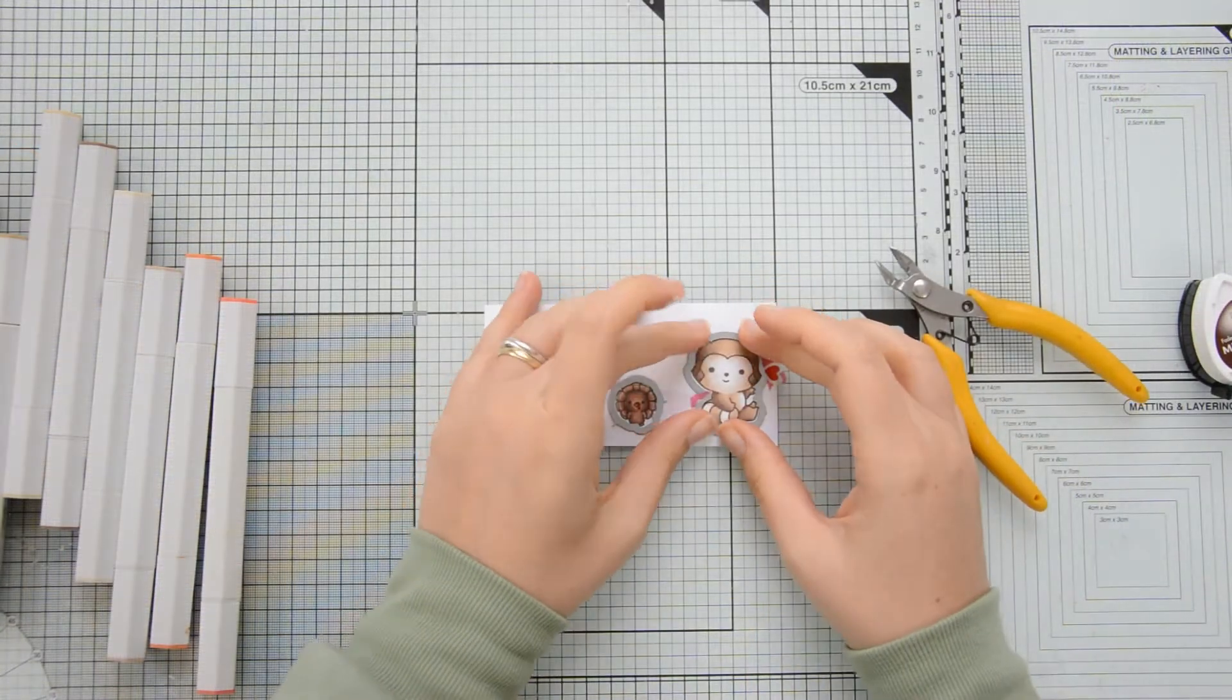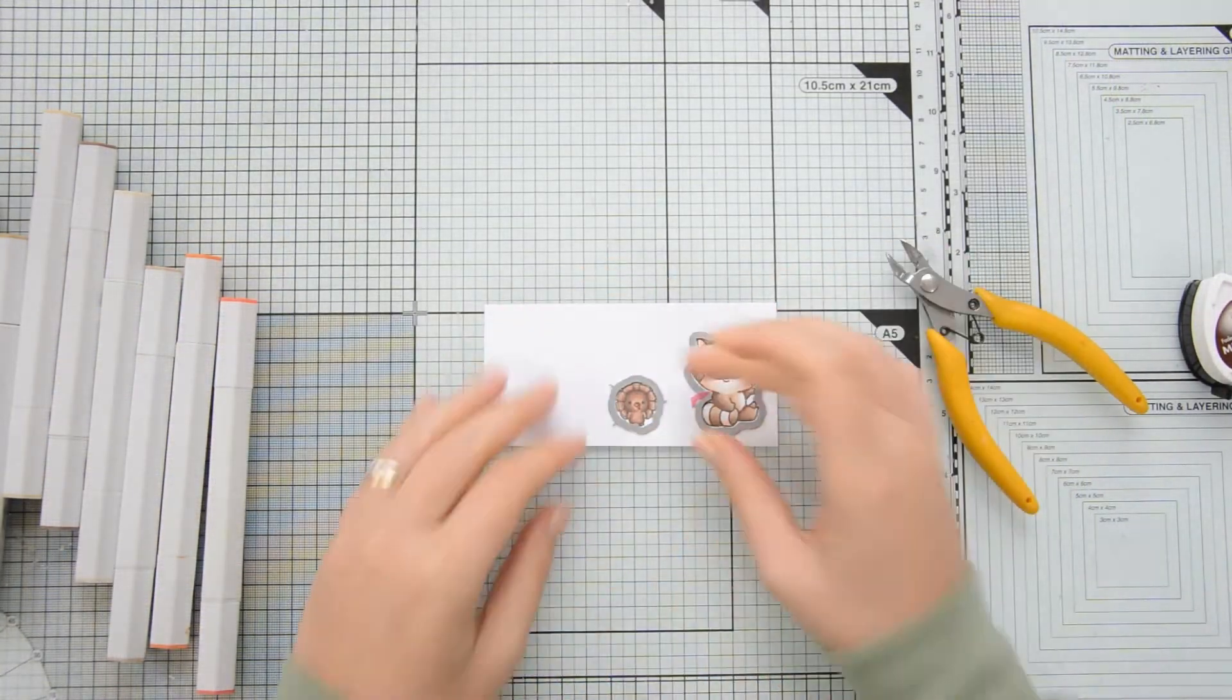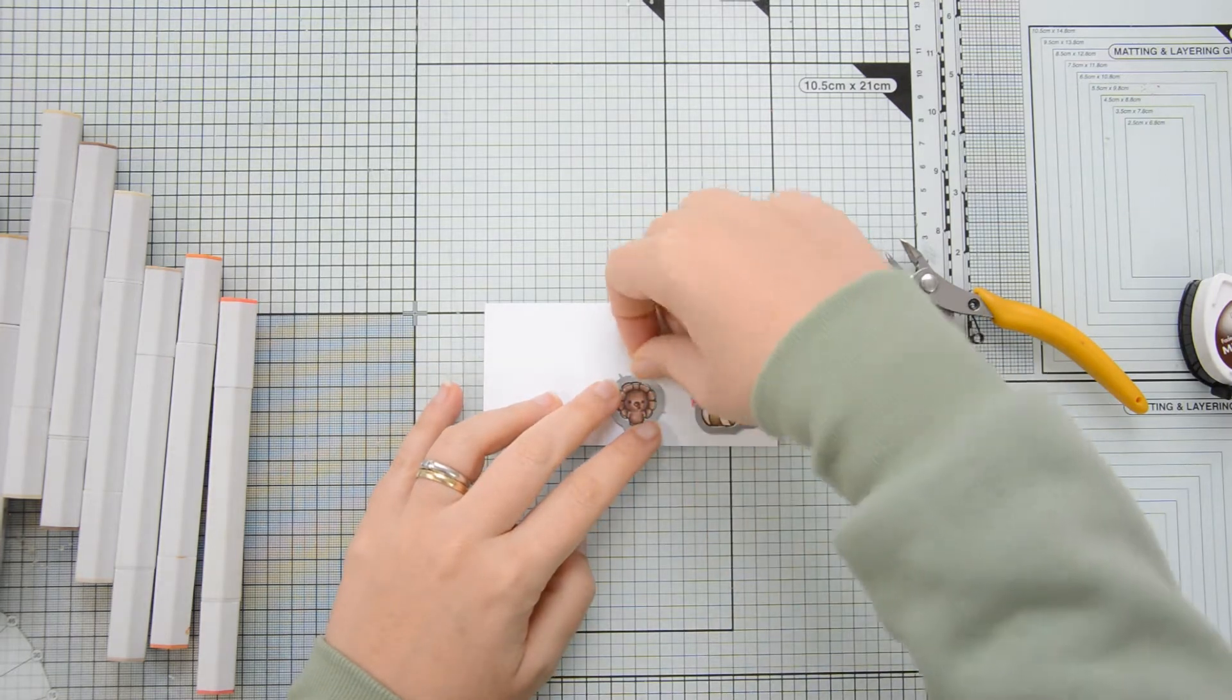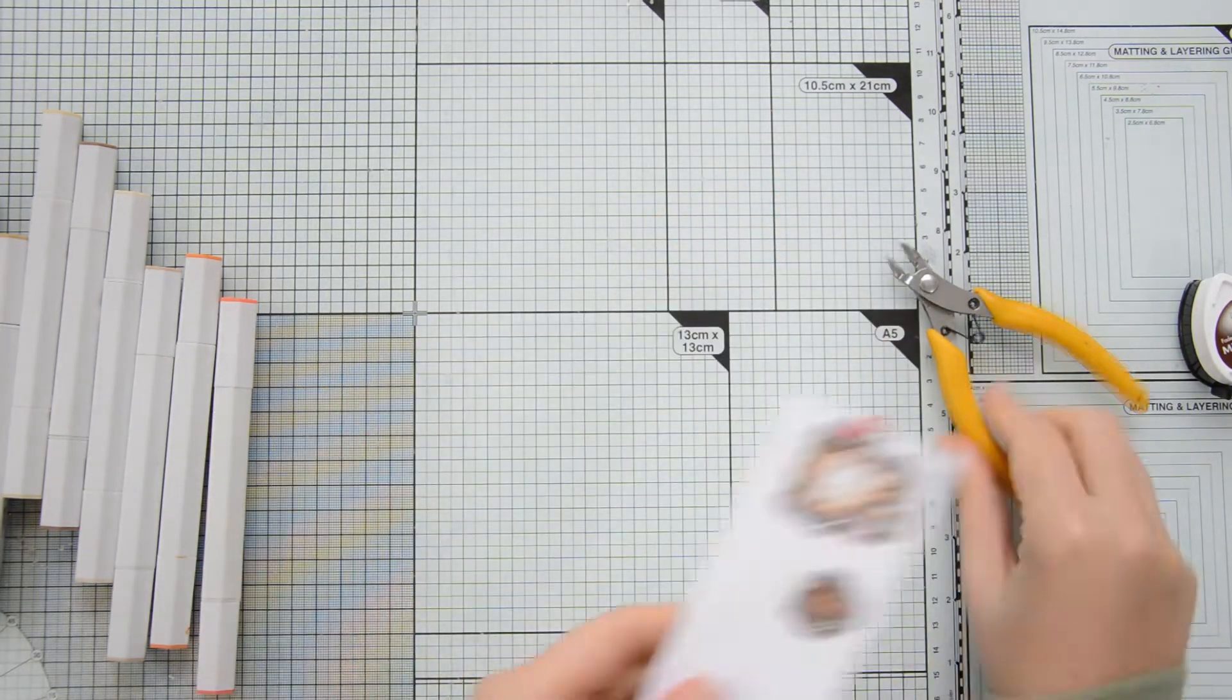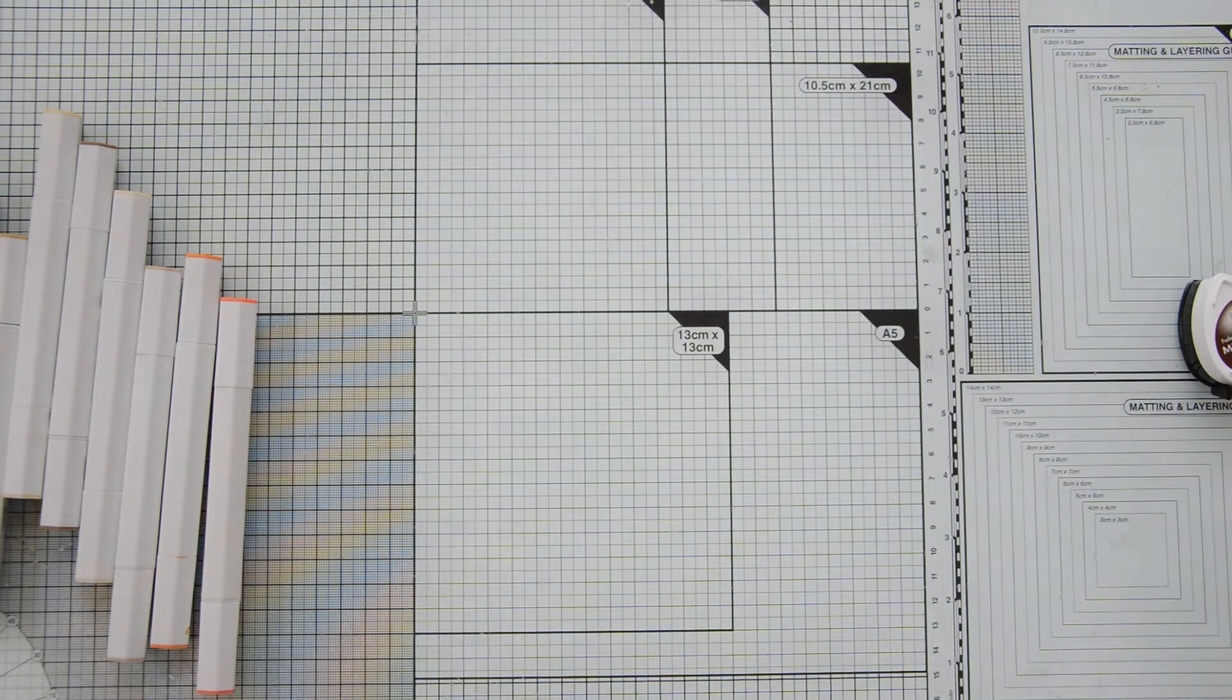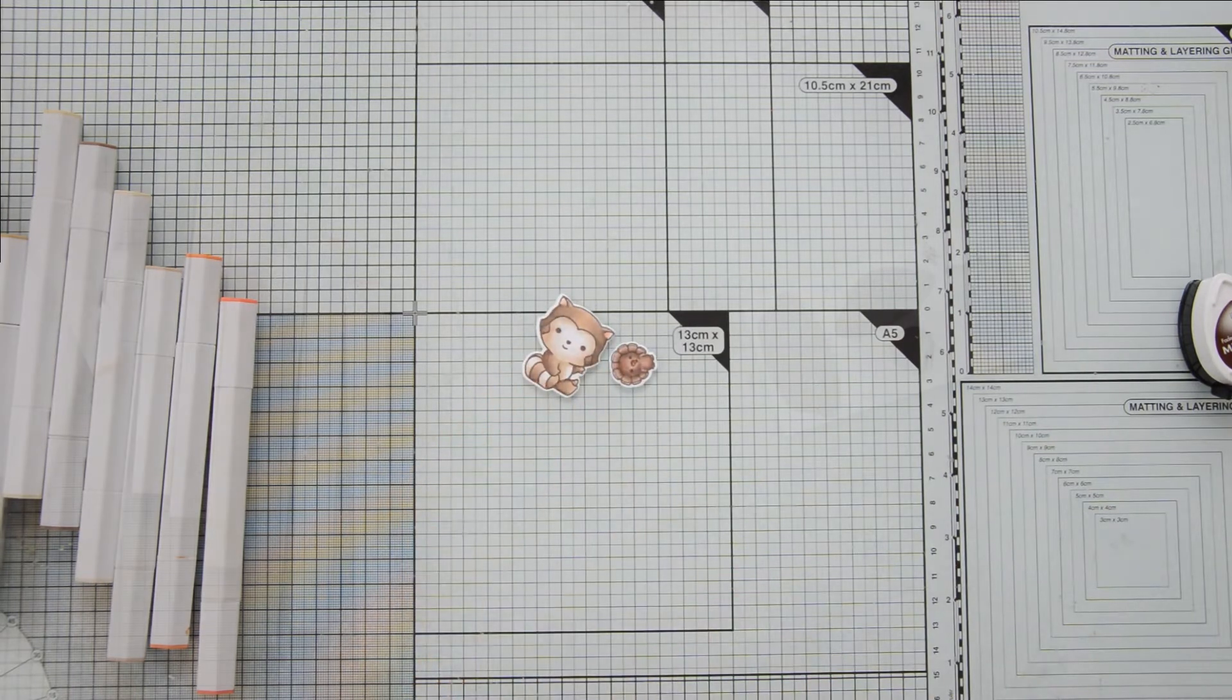Once I was done coloring I die cut everything with the Indian Summer coordinating dies. I'm securing them to my cardstock using some low tack tape and I'm running them through my die cutting machine.